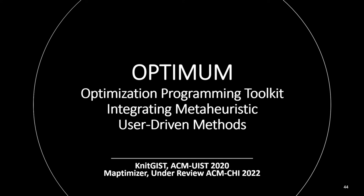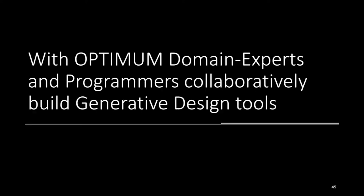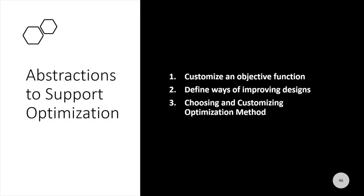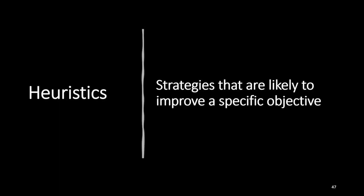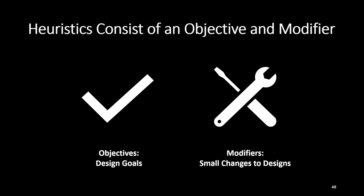Optimum helps domain experts and programmers to collaboratively build generative design tools. It does this with a few abstractions: first, it helps us customize an objective function; second, it defines ways of improving designs to meet those objective functions; and then it helps us choose and customize an optimization method tailored to that function. It brings in expertise from domain experts by honing in on the concept of a heuristic — a strategy that is likely to improve a specific set of objectives. We can further decompose a heuristic into objectives (the design goals) and modifiers that make changes to designs to meet those objectives.